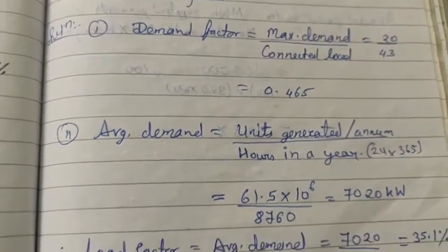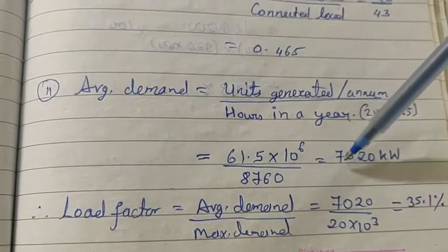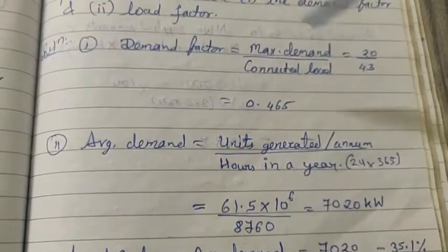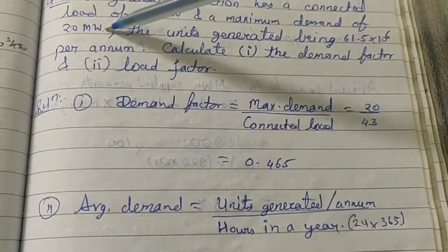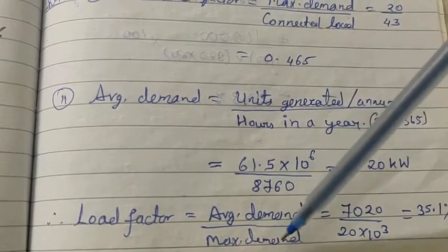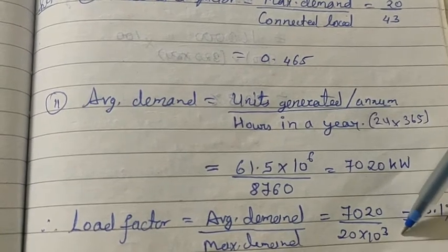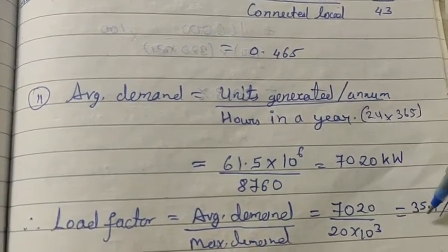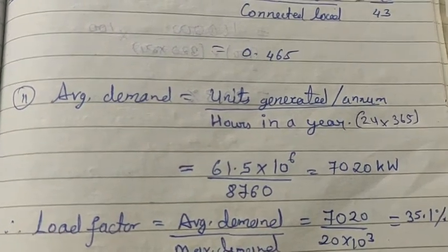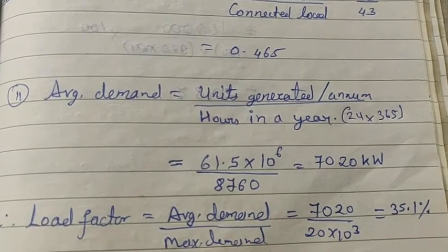Load factor equals average demand divided by maximum demand. Average demand is 7020 kilowatt, and maximum demand is 20 megawatt, which we convert to kilowatt as 20 × 10³ kilowatt. Both units cancel out, and the load factor comes out to be 35.1%. Thank you.